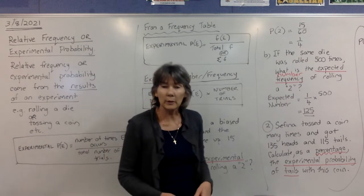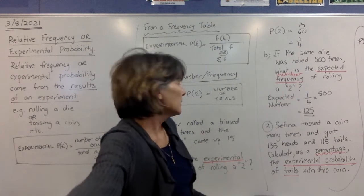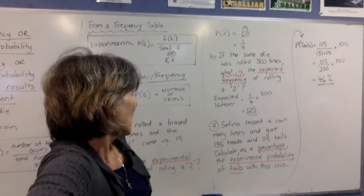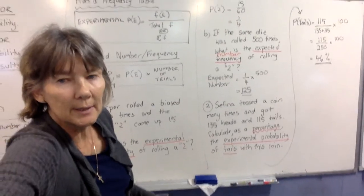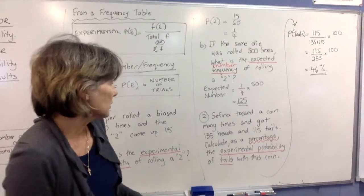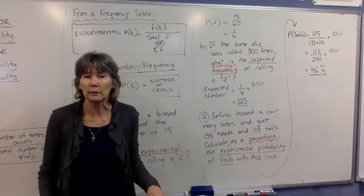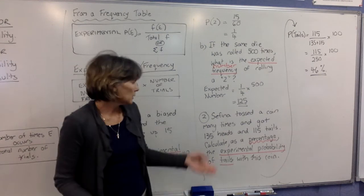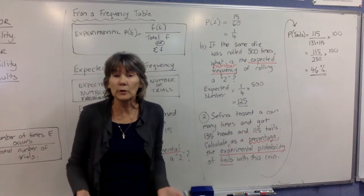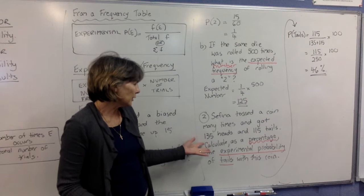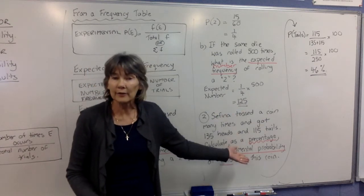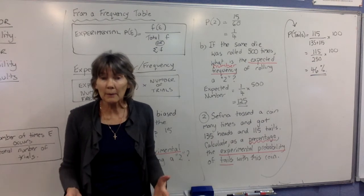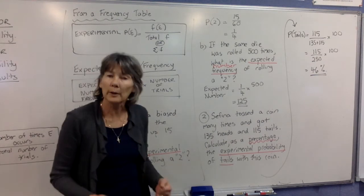We're going to do another question here. The question says, Sabina tossed a coin. And she got 135 heads and 115 tails. Now notice it doesn't tell you how many times they tossed the coin. But coins can only land on heads or tails. So if you add these together, you'll know how many times it was tossed. So 135 plus 115, if you use your calculator, it gives you 250. So that's how many times we tossed this coin, 250 times.